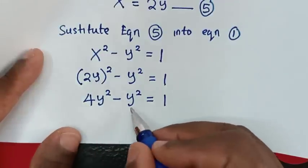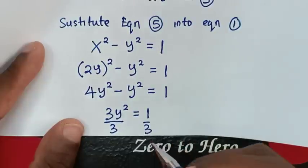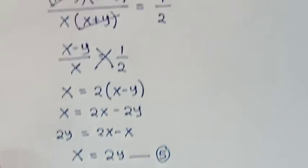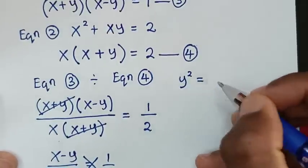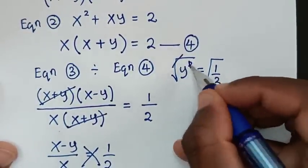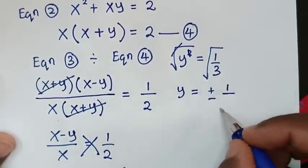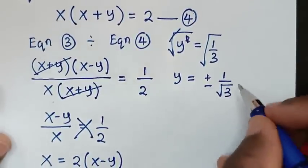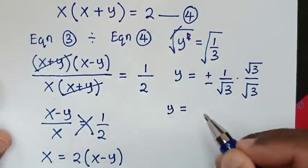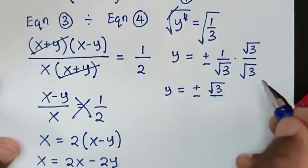Then 4y squared minus y squared is 3y squared equal to 1. Dividing both sides by 3 gives y squared equal to 1 over 3. Applying square root to both sides, y equals plus or minus 1 over √3. Rationalizing the denominator by multiplying by √3 over √3, we get y equals plus or minus √3 over 3.